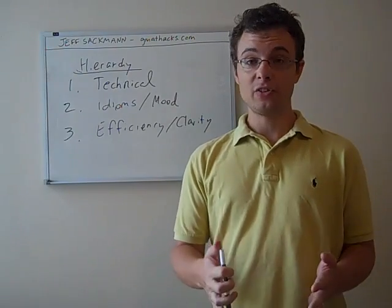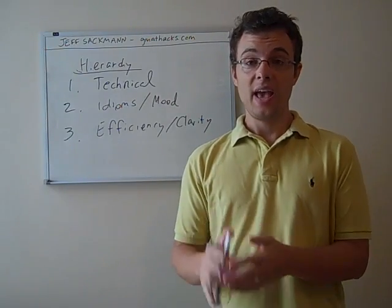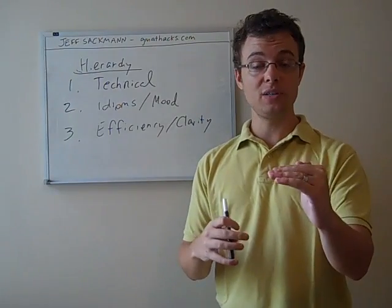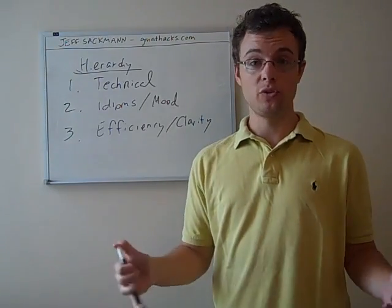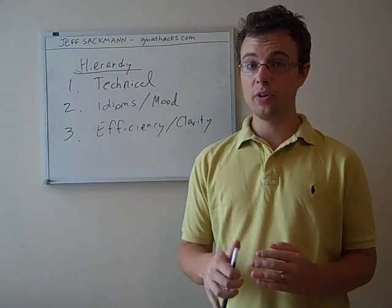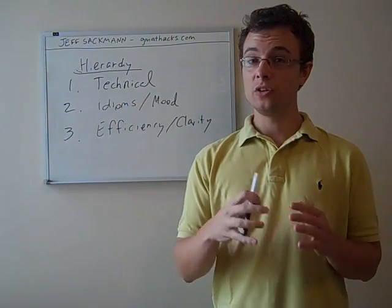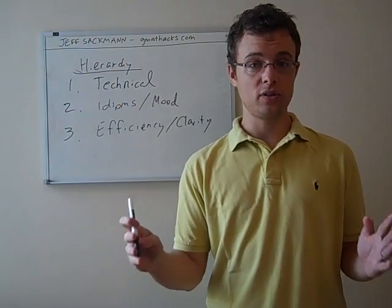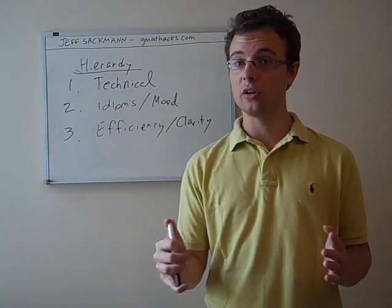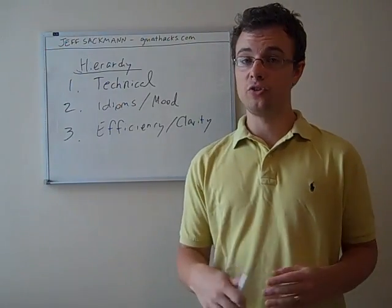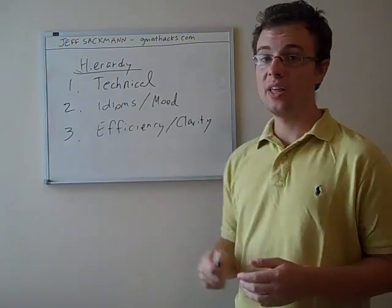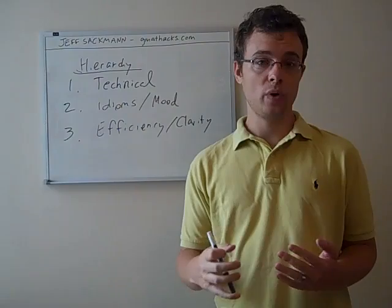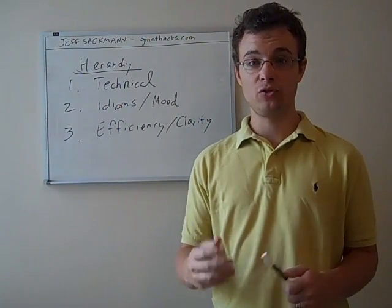Now, all that's true. Some answer choices do have those mistakes. And if it comes down to two choices where one of them has an efficiency mistake and one of them doesn't, then choose the one that doesn't have the mistake. That should be pretty clear cut. But what you'll notice as the questions get harder, especially as the underlying sections of the sentence corrections get longer, almost every one of the choices isn't going to be that efficient, isn't going to be that clear, isn't going to be very well constructed.